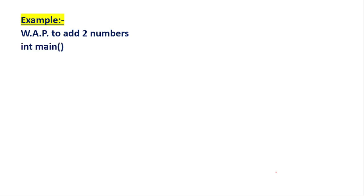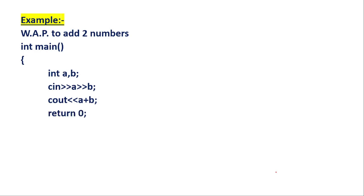First, I will write the header files — which I have skipped here and started from int main. Then I will put curly braces and declare two variables. After that I will take the values of these two variables from the user, and I will calculate them by writing A plus B formula directly with cout, and close the program. This is the program normally created without using a function.